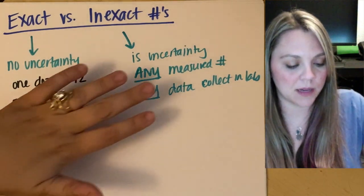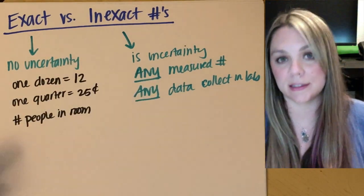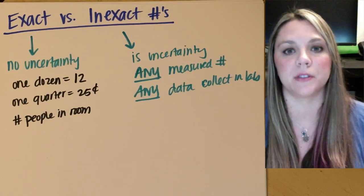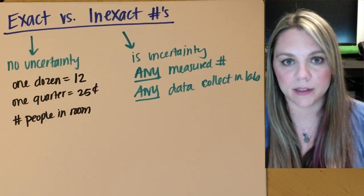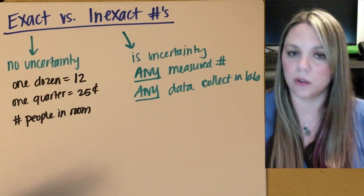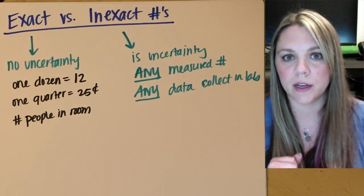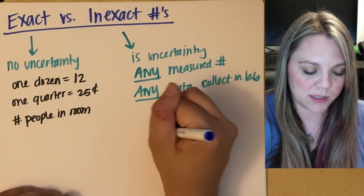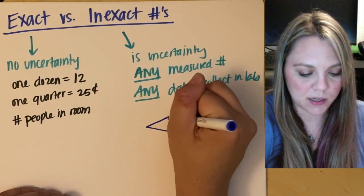Okay. It is absolutely impossible to get an exact number from your data in lab, right? There's always going to be some level of uncertainty. Let's say you were weighing a sample of sodium chloride or salt. You go to the scale, you put your sodium chloride on the scale and your little scale reads out. Why am I going to draw you a scale? This is a terrible idea.